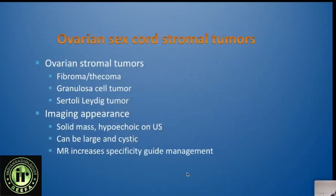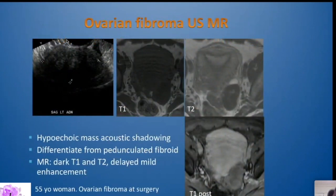Ovarian fibroma is part of the ovarian sex cord stromal tumor group, which are less common and include fibroma, thecoma, granulosa cell tumor, and Sertoli tumors. They can be solid and hypoechoic, or large and cystic, particularly granulosa cell tumors. MRI increases specificity and helps guide management. Another fibroma example: hypoechoic mass with acoustic shadowing, dark on T1, dark on T2, with some delayed mild enhancement post-contrast — confirmed at surgery.